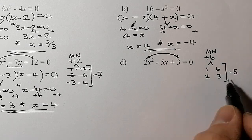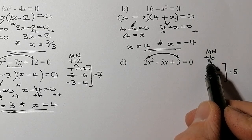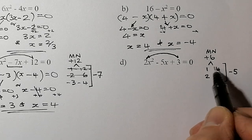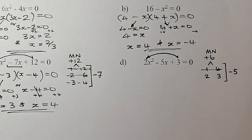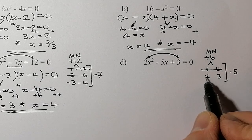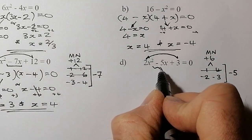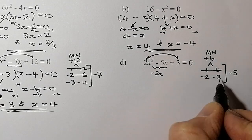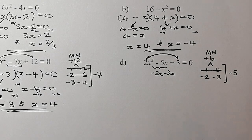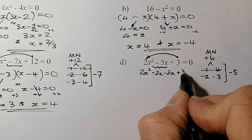I need my factor pair to combine to give negative 5. Since the constant term is positive, both factors must have the same sign. If both positive, 2 and 3 give +5; if both negative, they give −5 — that's what I need. So I'll replace the −5x term by splitting it into −2x and −3x, since −2x − 3x = −5x.